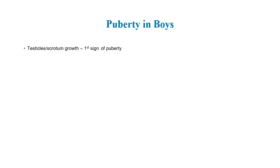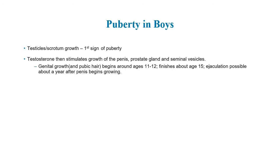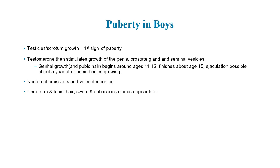In boys, the first sign of puberty is testicular growth. The testicles stimulate growth of the penis, the prostate gland, and the seminal vesicles. Growth of pubic hair begins around ages 11 to 12 and finishes about 15. Ejaculation is possible about a year after the penis starts growing — this is spermarche, the classical definition of puberty in boys. During this time, nocturnal emissions are possible, voice deepening occurs, underarm and facial hair develop, and the sweat and sebaceous glands appear.